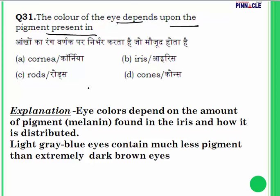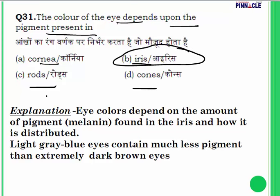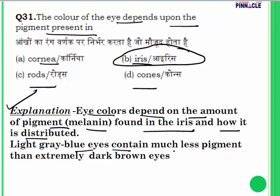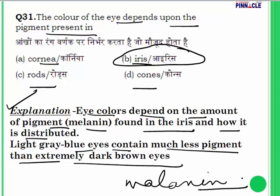Question 31: the color of the eye depends upon the pigment present in which structure — the cornea, the rods, the iris, or the cones? The answer is the iris. Eye colors depend on the amount of melanin found in the iris and how it is distributed. Light gray or blue eyes contain much less pigment than dark brown eyes. Melanin is also present in our skin — the more the melanin, the darker the skin.